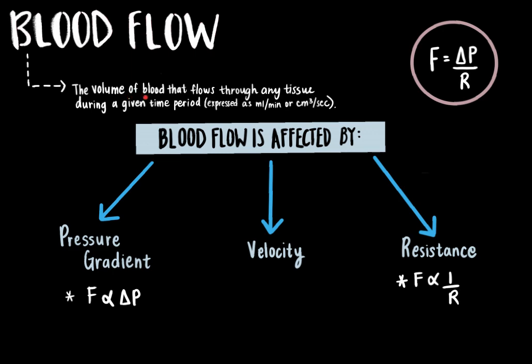Blood flow is the volume of blood that flows through any tissue during a given time period, most often expressed as milliliters per minute or centimeters cubed per second. The three main factors that affect blood flow are the pressure gradient that drives blood flow through tissues, velocity at which blood flows, and resistance to blood flow encountered within blood vessels.